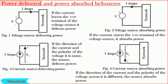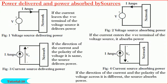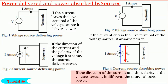Friends, next, we shall learn another concept of source delivering and absorbing power. Consider the voltage source shown. If the current leaves the positive terminal of the source, it delivers power. On the other hand, if the current enters the positive terminal of the voltage source, then it absorbs power. Similarly, consider the current sources. If the direction of the current and the polarity of the voltage across the source are oriented in the same direction, then the current source delivers power. Whereas, if the direction of the current and the polarity of the voltage across it are oriented in different directions, then the current source absorbs power. Hope you understand it.